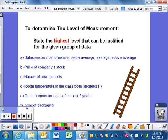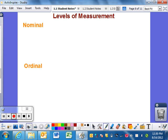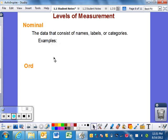Nominal is your lowest level. It consists of names, labels, or categories. Examples include gender - male or female, eye color - blue, brown, green, hazel, or cities. If you name things, label them, or categorize them, it's nominal.